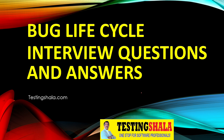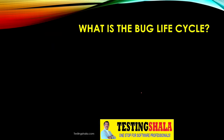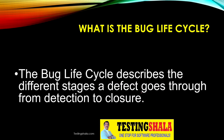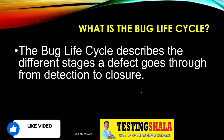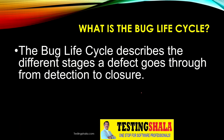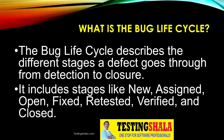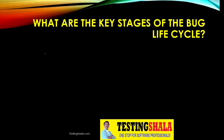The first interview question is: what is the bug life cycle? The bug life cycle basically describes the overall stages of a defect, which goes from identifying the defect — detection — to the closure of the defect. The different stages include new, assigned, open, fixed, retested, verified, and closed.